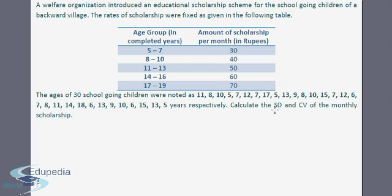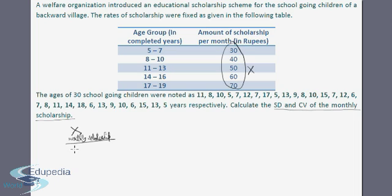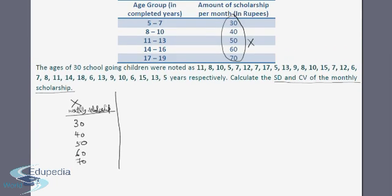We need to calculate the standard deviation and coefficient of variation of the monthly scholarship. My value of x would be the monthly scholarship, given in rupees. The values of x here are 30, 40, 50, 60, and 70. Then we have the ages of 30 school going children given.